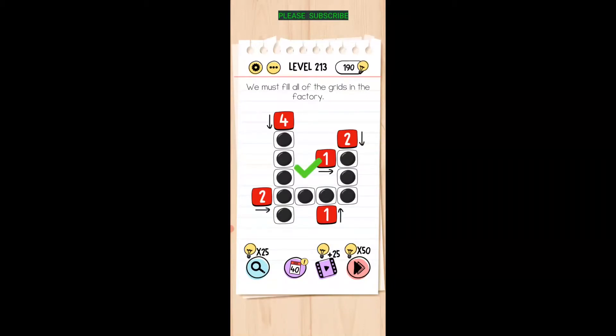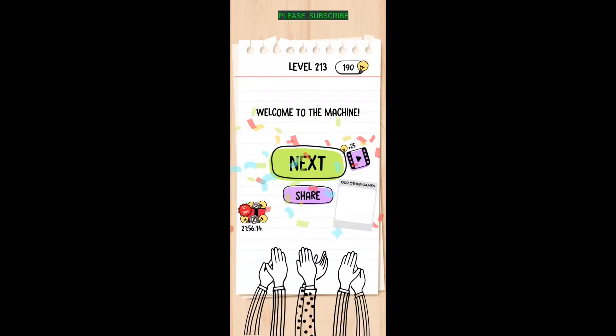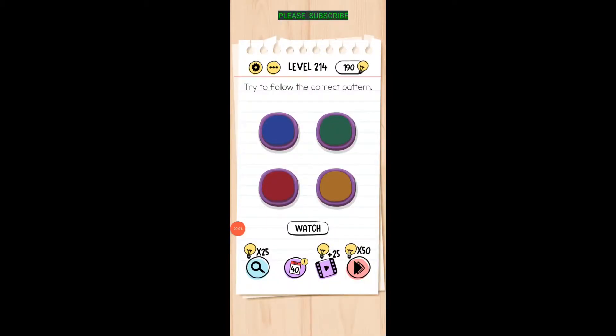All right, that was interesting. Try to follow the correct pattern. We're going to watch: yellow, blue, red, red, green. Yellow, blue, red, red, green. Watch: yellow, blue, red, red, green. Yellow, blue, red, red, green. I did that, okay, whatever.